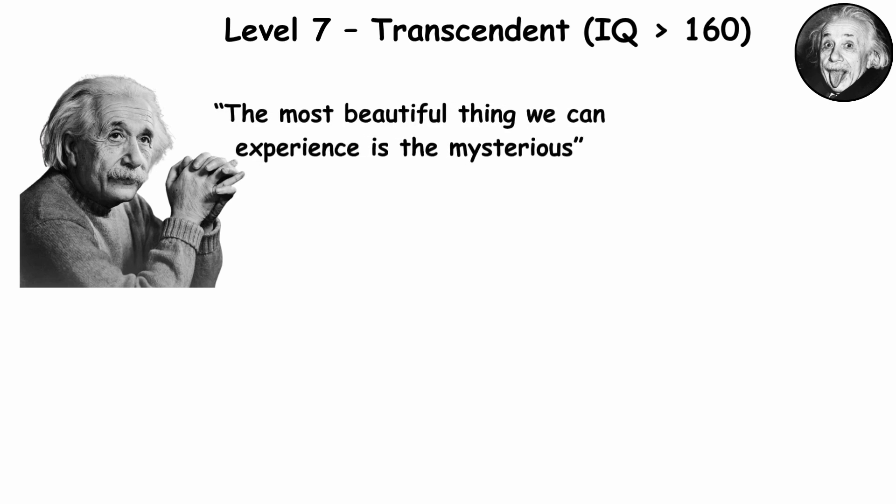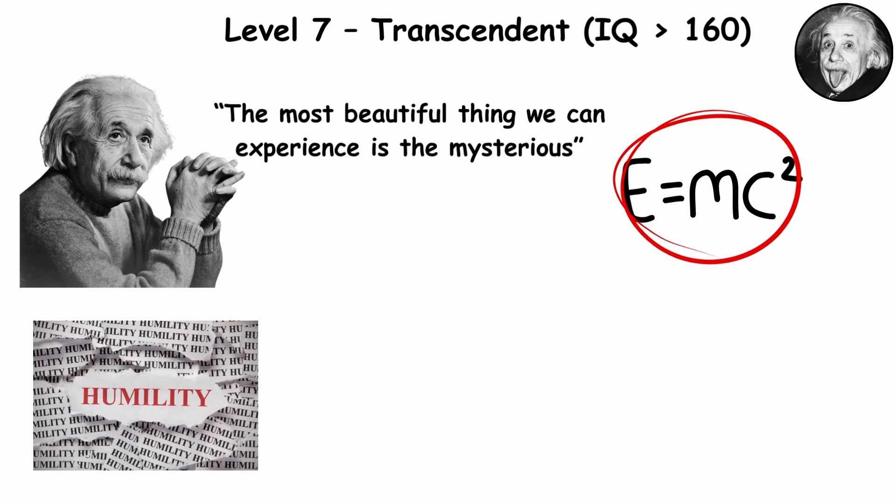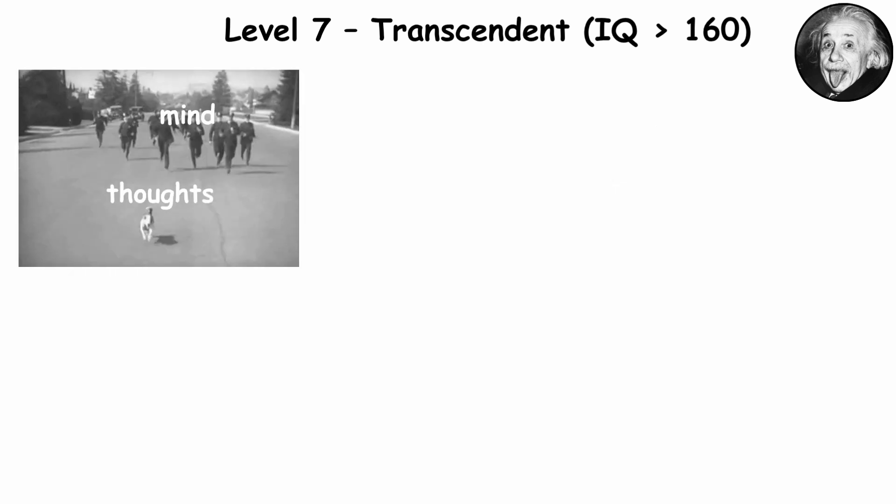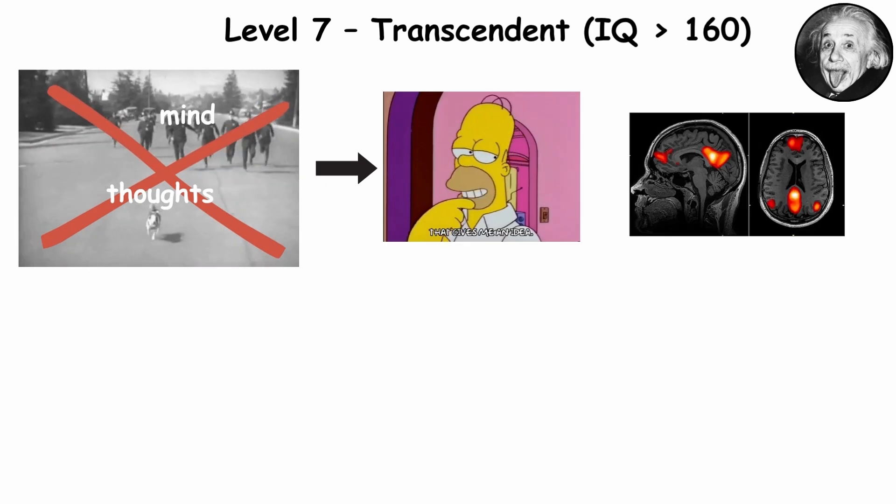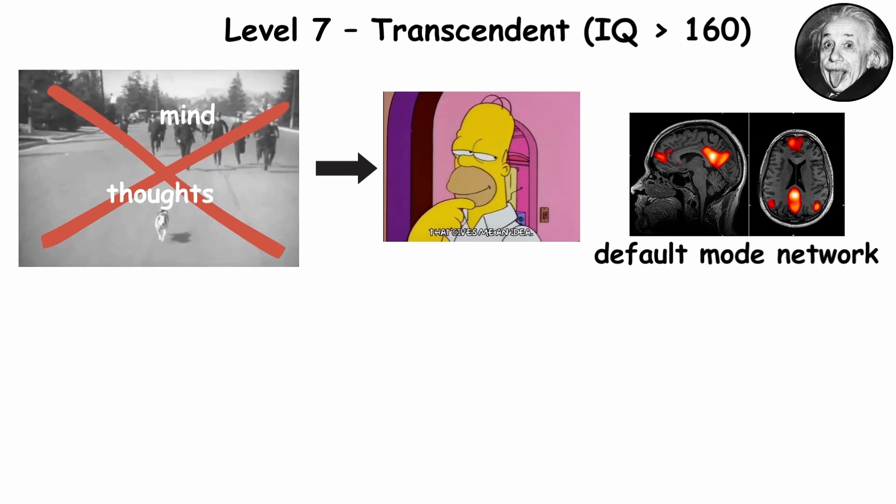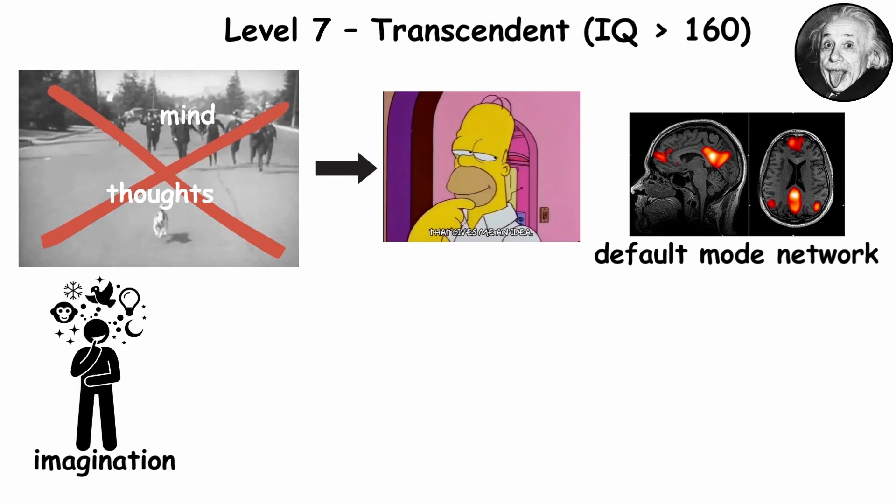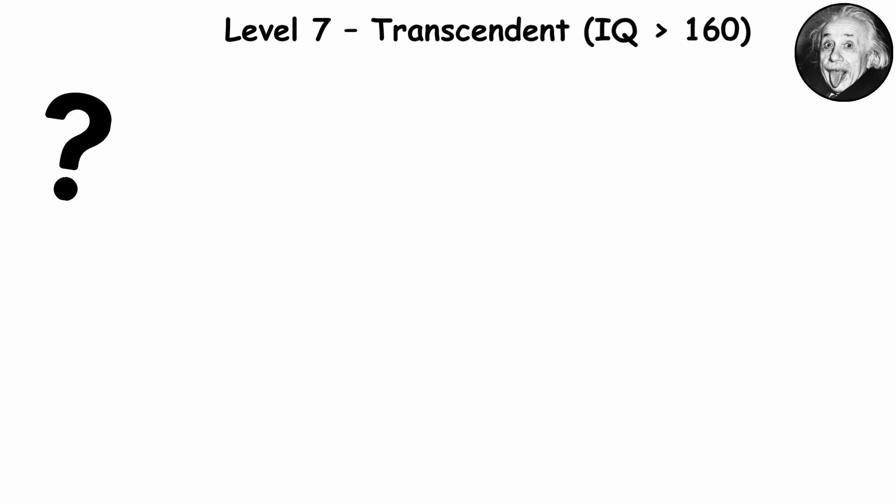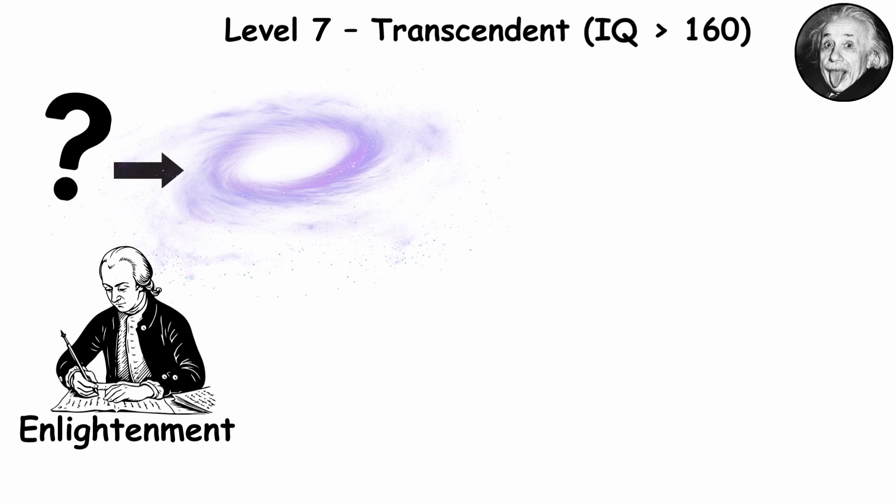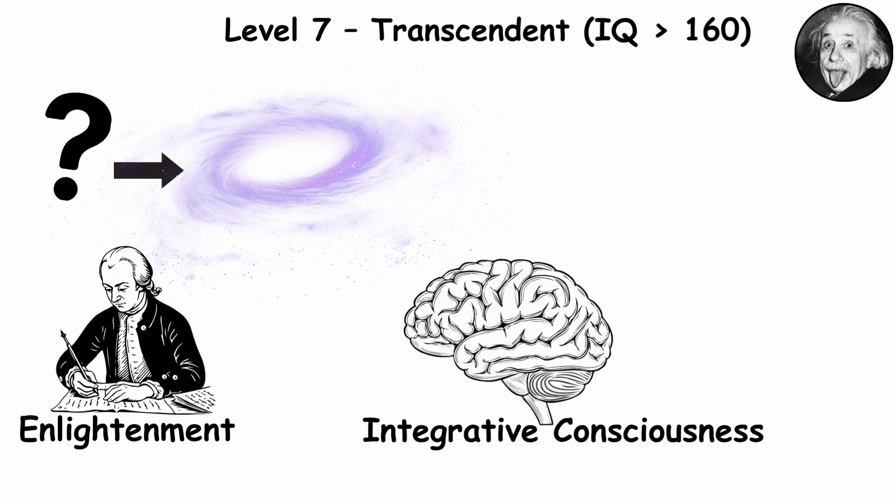Einstein once said, the most beautiful thing we can experience is the mysterious. For someone who rewrote physics, that's humility so deep it loops back to genius. At this level, the mind stops chasing thoughts and starts orbiting ideas. Inside the brain, something fascinating happens. A network called the default mode network, the system that links imagination with self-awareness, begins syncing with regions tied to empathy and reflection. Translation? The self starts blending into everything else. Some traditions call that enlightenment. Neuroscientists call it integrative consciousness. Same thing, but with a science name.